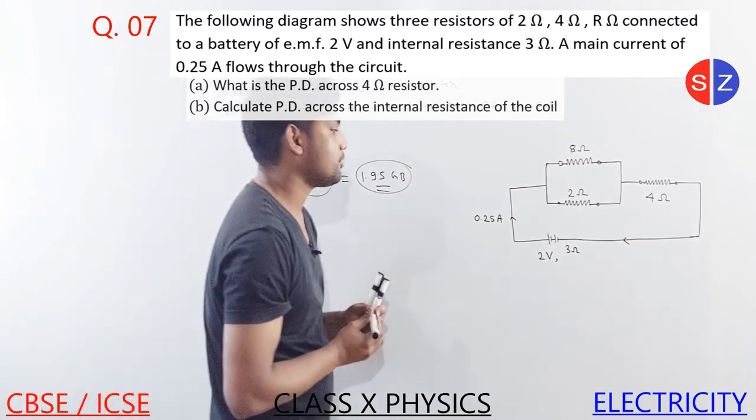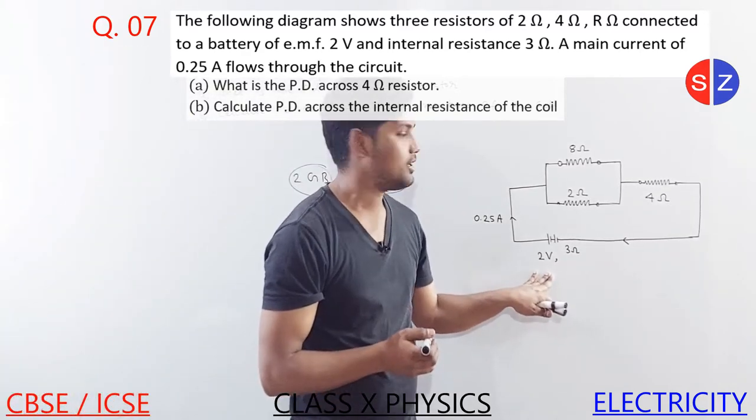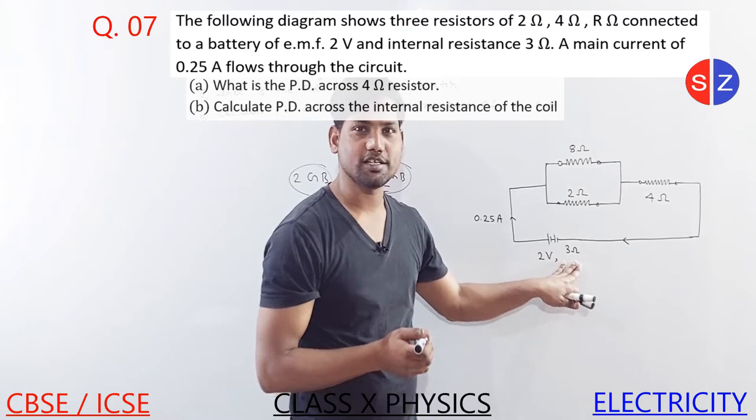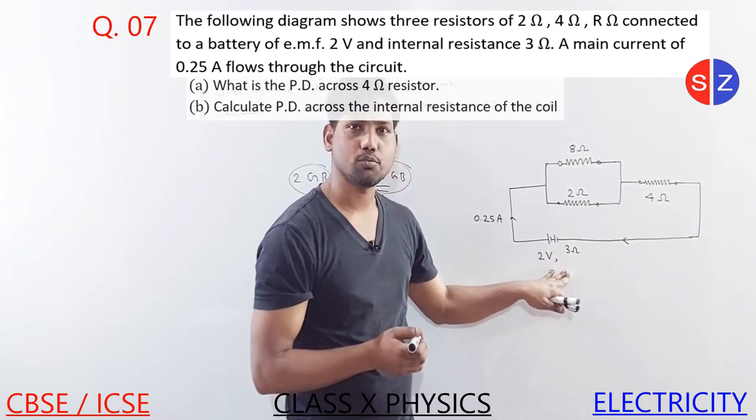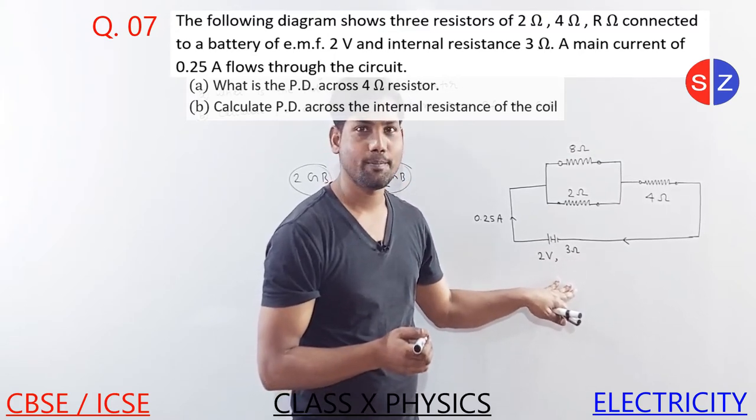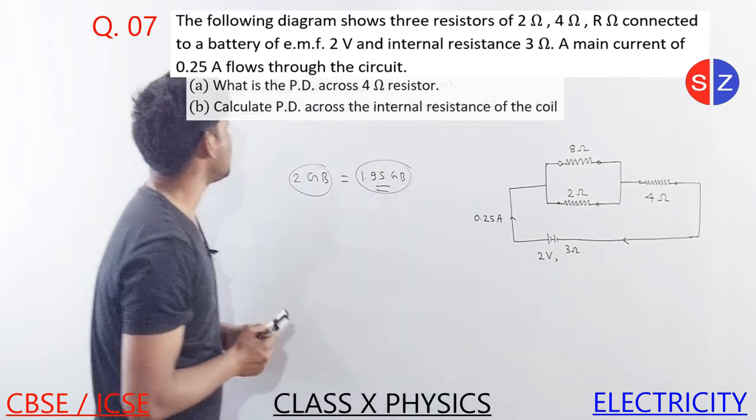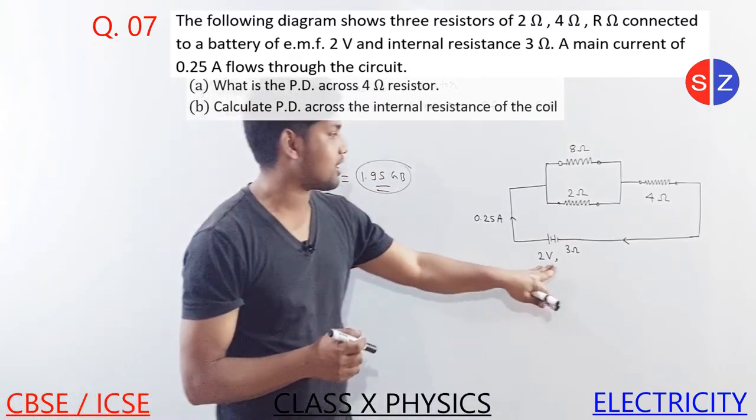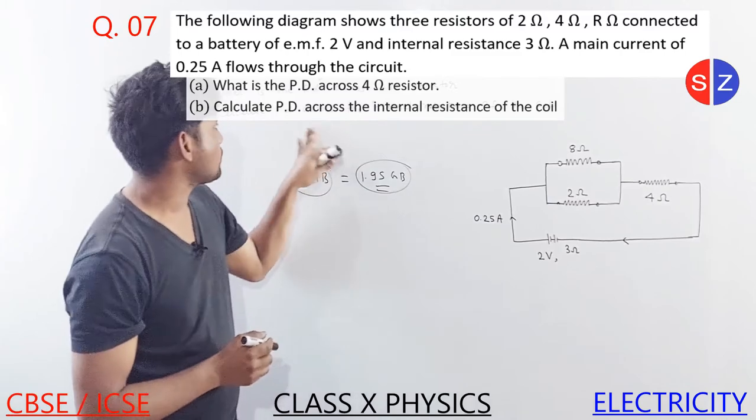The same here - the battery is 2 volts, but it has some internal resistance. What will happen? The battery will consume a little bit of voltage, so we need to account for that voltage. The internal resistance will consume some voltage.